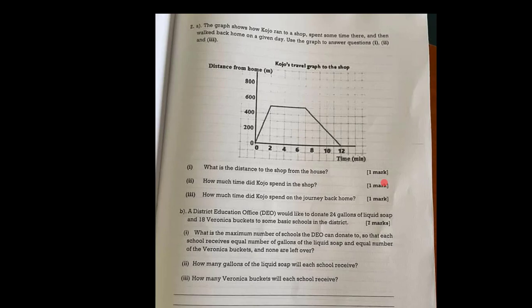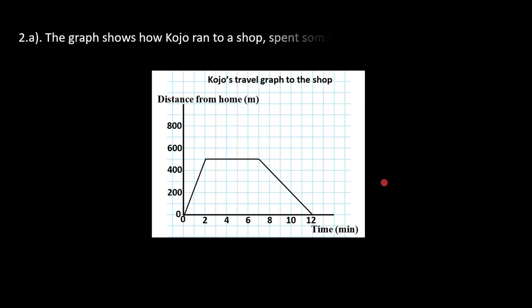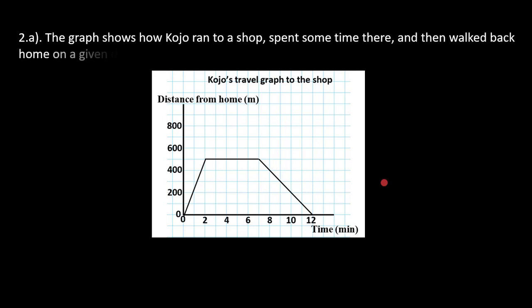Let's go to our computer generated images. This was the question and this was the diagram that was given. The graph shows how Kojo ran to a shop, spent some time there and then walked back home on a given day.